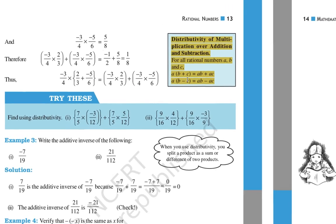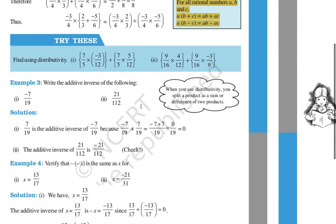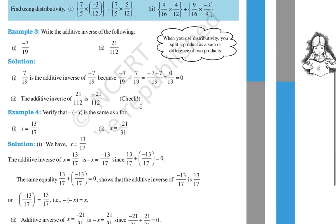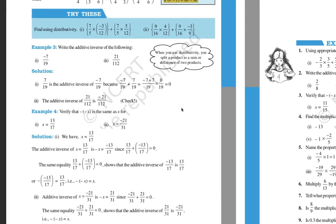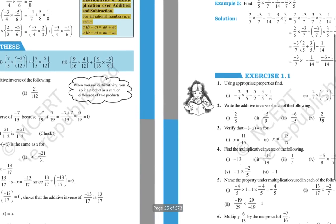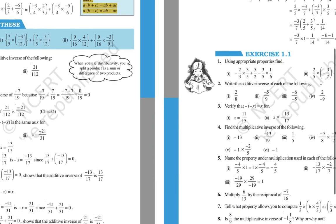So for any rational numbers a, b, c: a into (b plus c) equals ab plus ac, and a into (b minus c) equals ab minus ac. If you have any doubts, ask me — I will make more videos solving numerical exercises and considering your doubts.